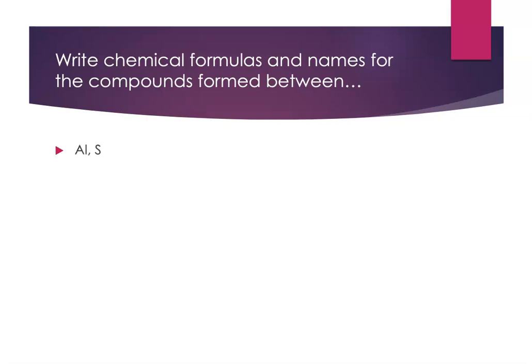The compound between aluminum and sulfur: aluminum is a group 13 element with a +3 charge; sulfur is a group 16 element with a typical −2 charge. A one-to-one ratio doesn't add to zero. Using the lowest common multiple of 3 and 2, which is 6, we need two aluminums (+6 total) and three sulfides (−6 total). The compound is Al₂S₃, and the name is aluminum sulfide.